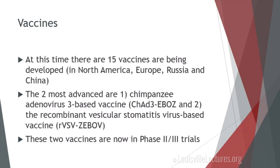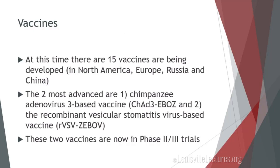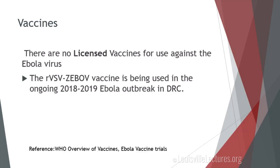What about vaccines? Well, at this time, worldwide, there are 15 vaccines being developed. The two most advanced are the chimpanzee adenovirus 3-based vaccine and the recombinant vesicular stomatitis virus-based vaccine. Right now, these two vaccines are in phase 2 and 3 trials. But understand that at present, there are no licensed vaccines against Ebola virus.